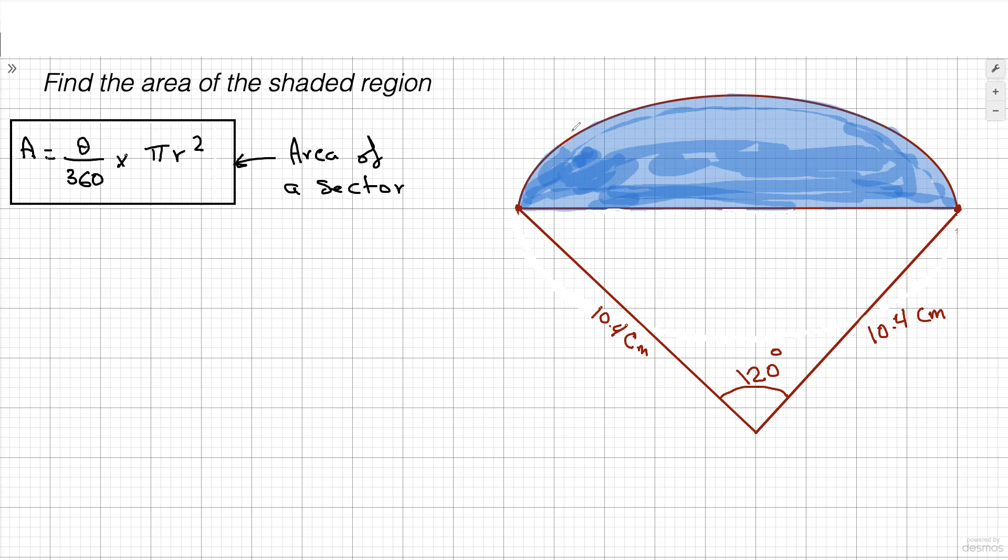You have to look at finding the area of the whole sector first. And then once you finish with that, then you need to find the area of this triangle right here and then subtract the area of the triangle from the area of the whole sector. And that will leave you with the area of this blue shaded region.